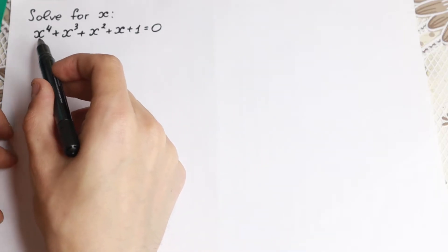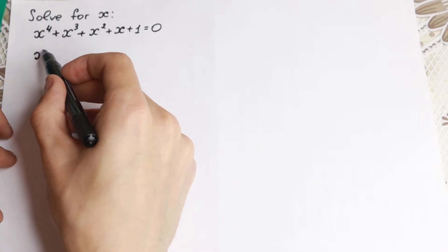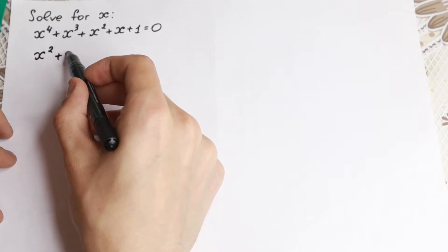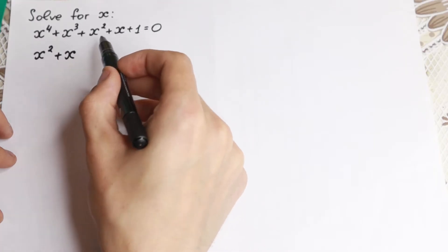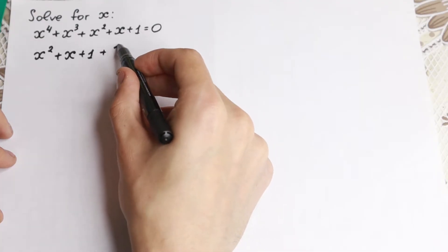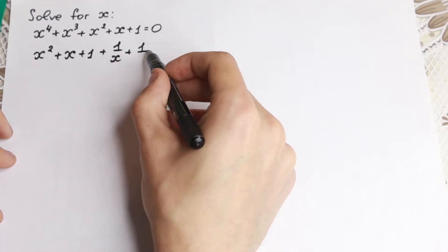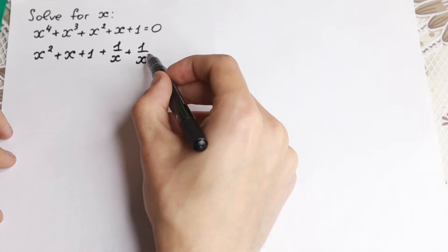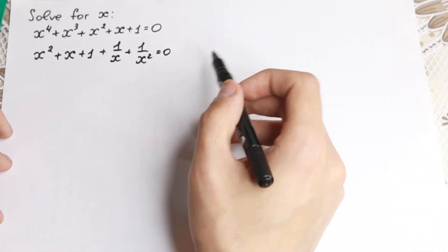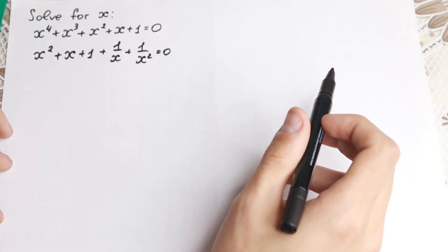If we divide each term by x², we get: x² plus x plus 1 plus 1/x plus 1/x² equal to 0. So we're just dividing both sides by x².